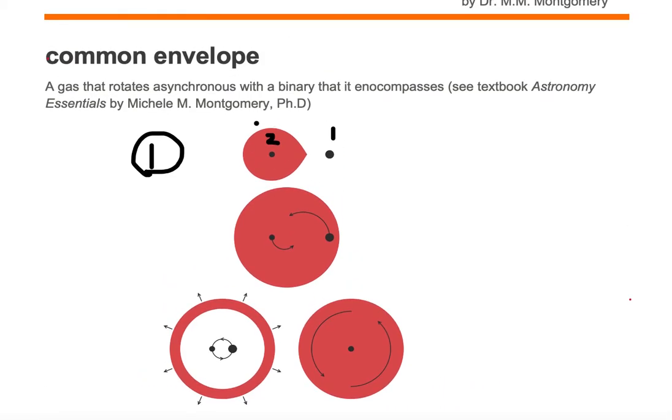This would not be an example of a common envelope because we don't see a gas rotating asynchronously with the binary that it encompasses. We have one object located outside of the gas.